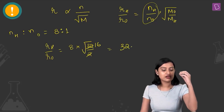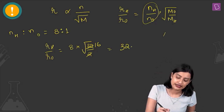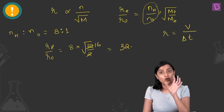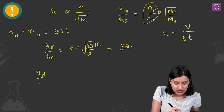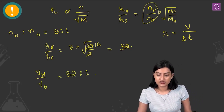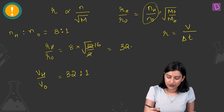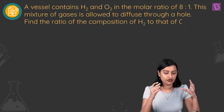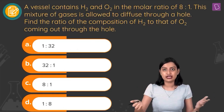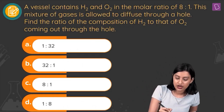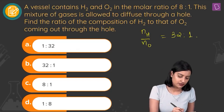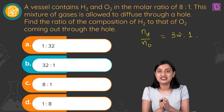Rate is volume effused per unit time. Since we are talking about effusion over the same time period, the volume of hydrogen effused divided by volume of oxygen effused is 32:1. By gas laws, volume is proportional to moles, so the ratio of moles of H2 diffusing to moles of O2 diffusing is 32:1. Option B, 32:1, is the right answer.